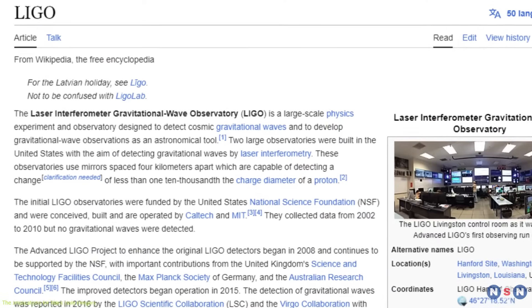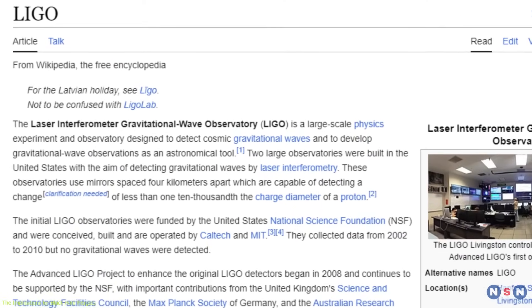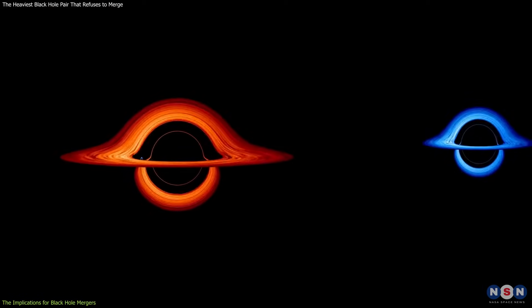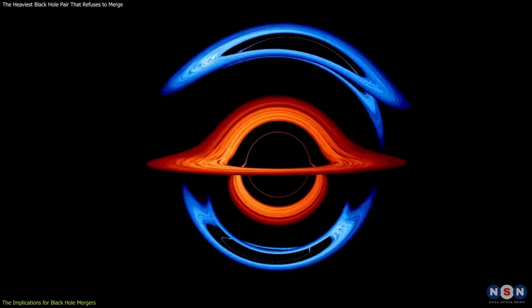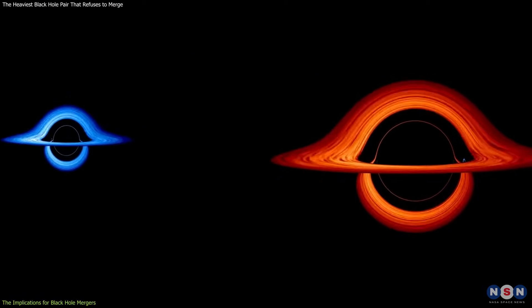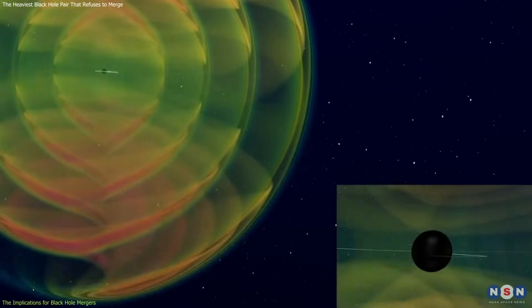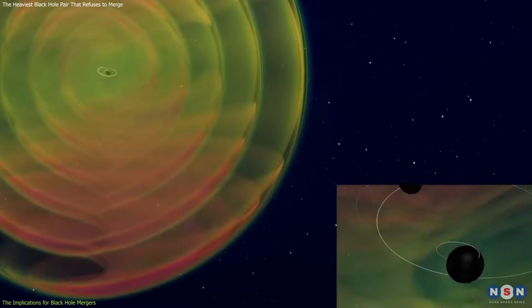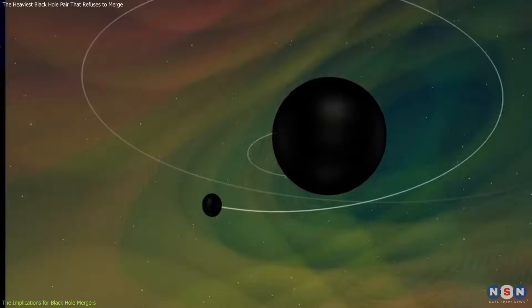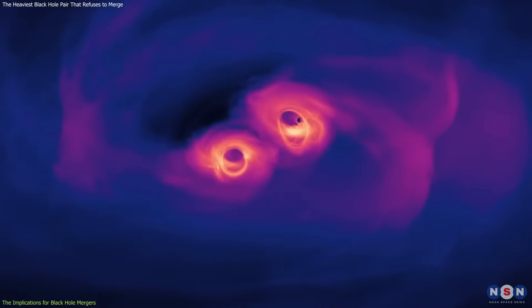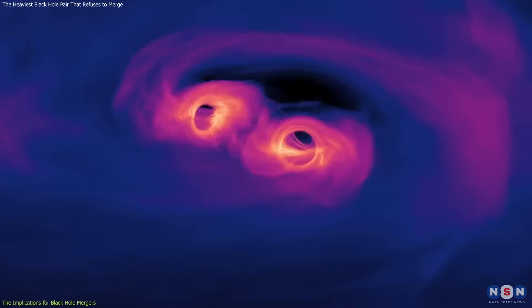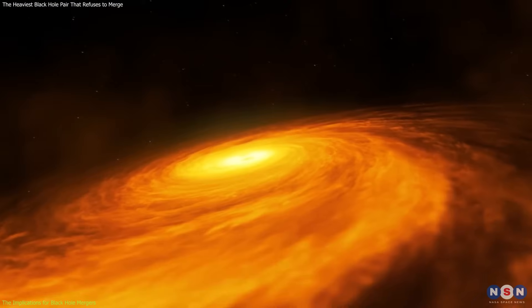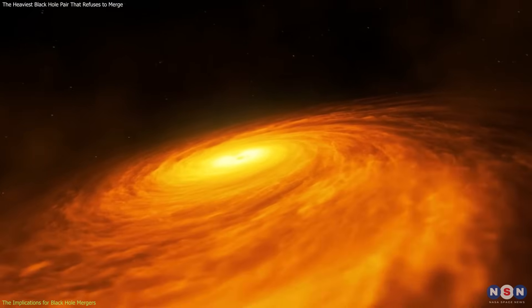However, despite theoretical predictions, supermassive black hole mergers have never been observed in progress. They are very rare and difficult to catch, requiring specific conditions and timescales. For example, the black holes need to be close enough to overcome their mutual repulsion and spiral inwards, but not too close to be obscured by dust and gas.